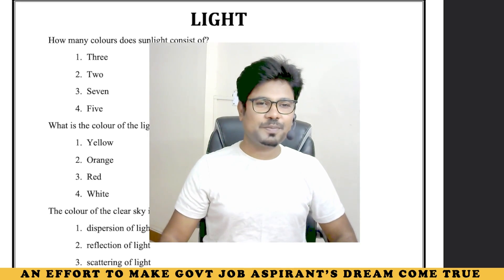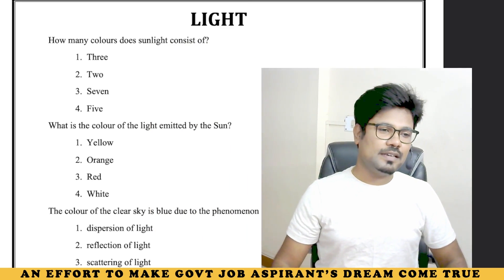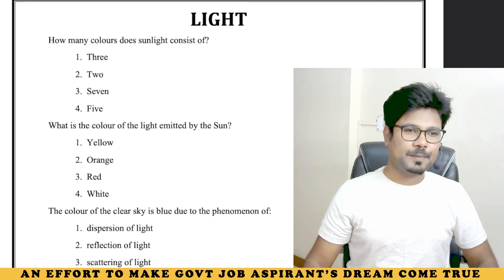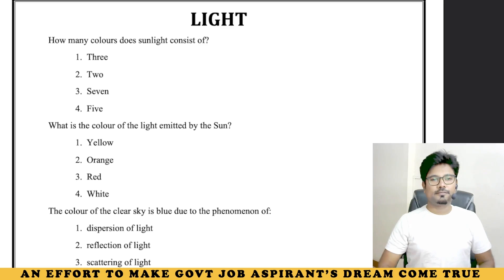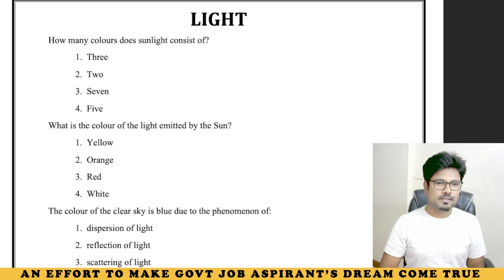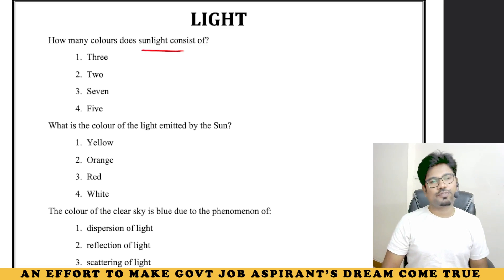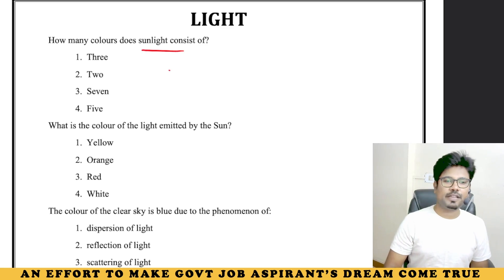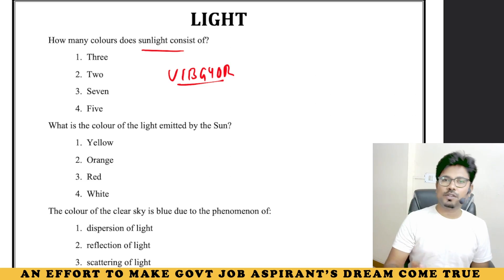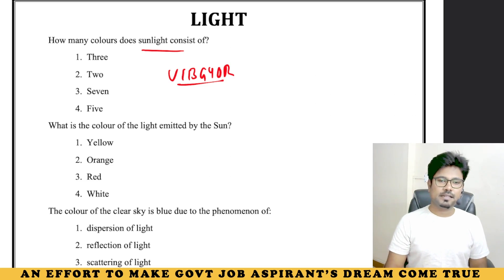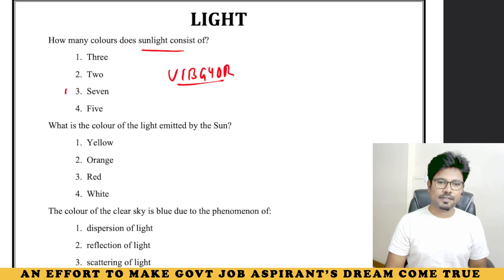Now let us come back to the issue. The first question is: how many colors does sunlight consist of? Sunlight has 7 colors. When these 7 colors are combined, it looks white in color. So how many colors does sunlight have? 7.